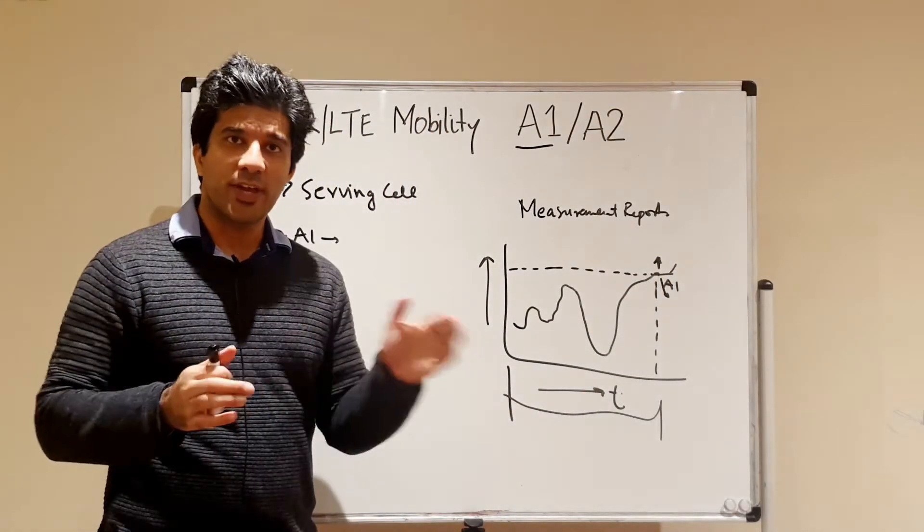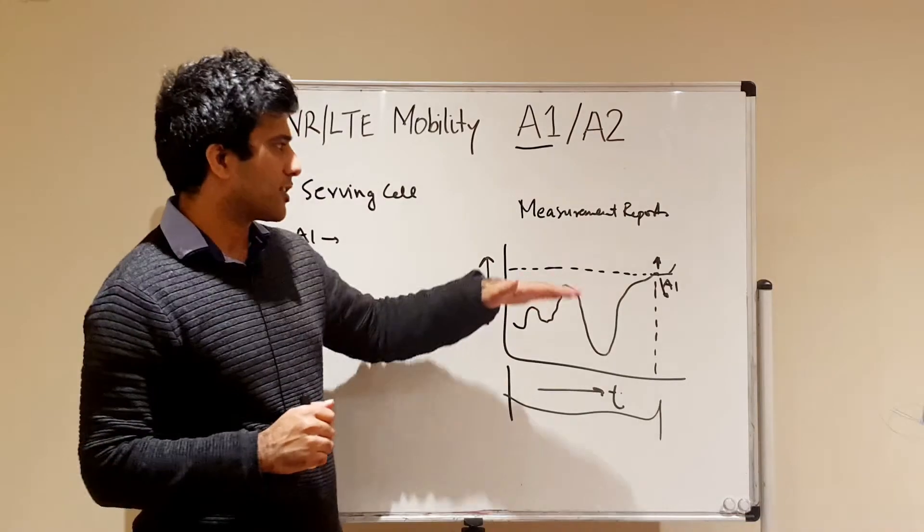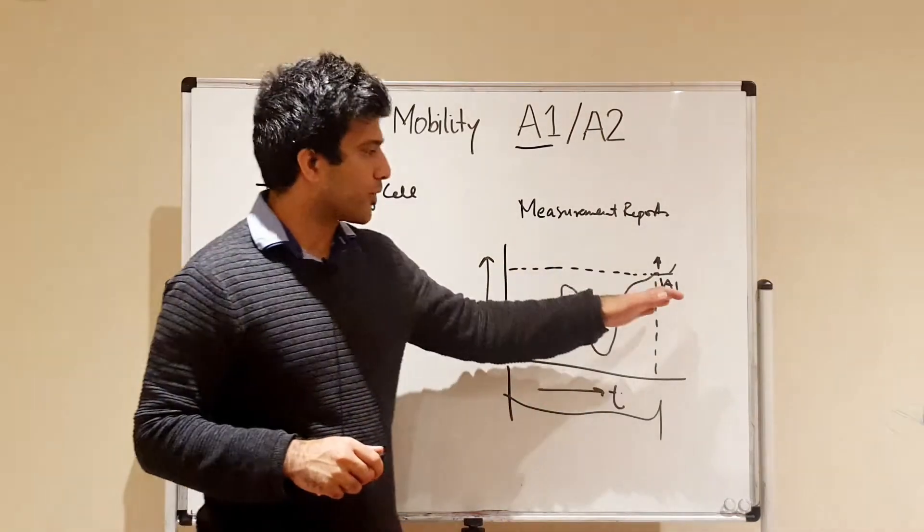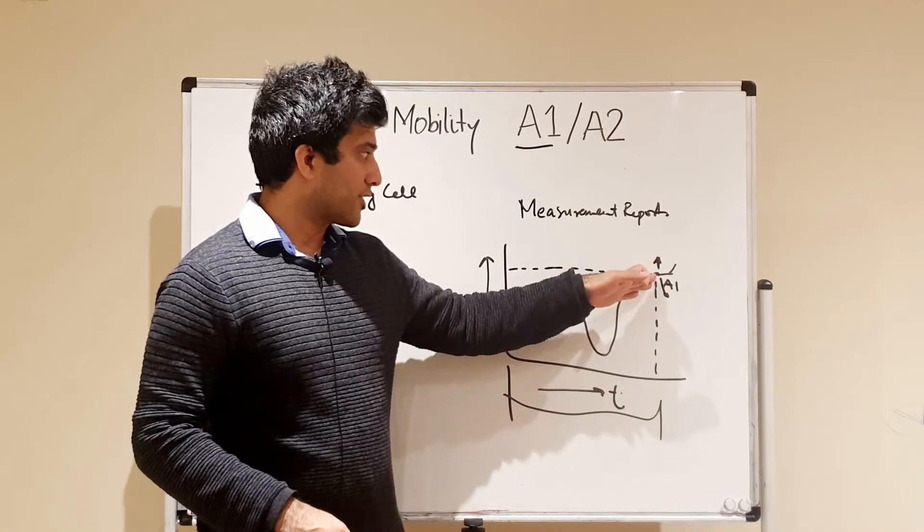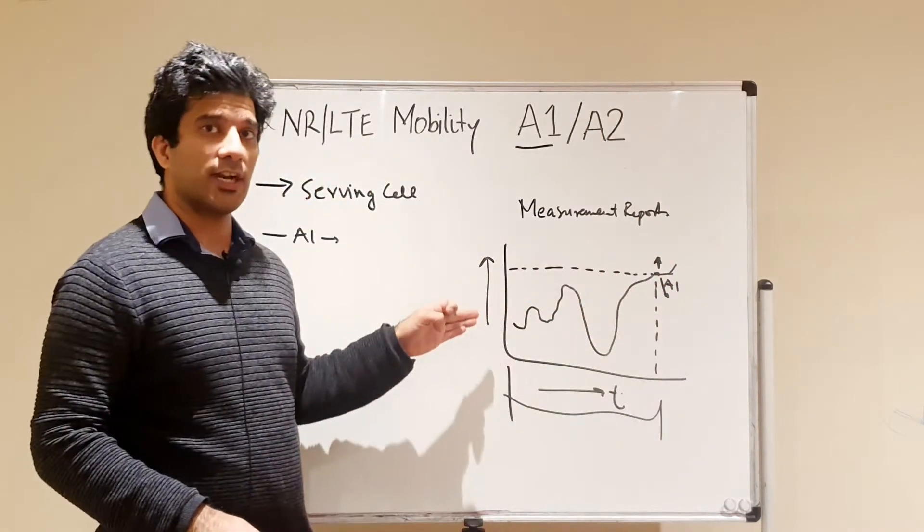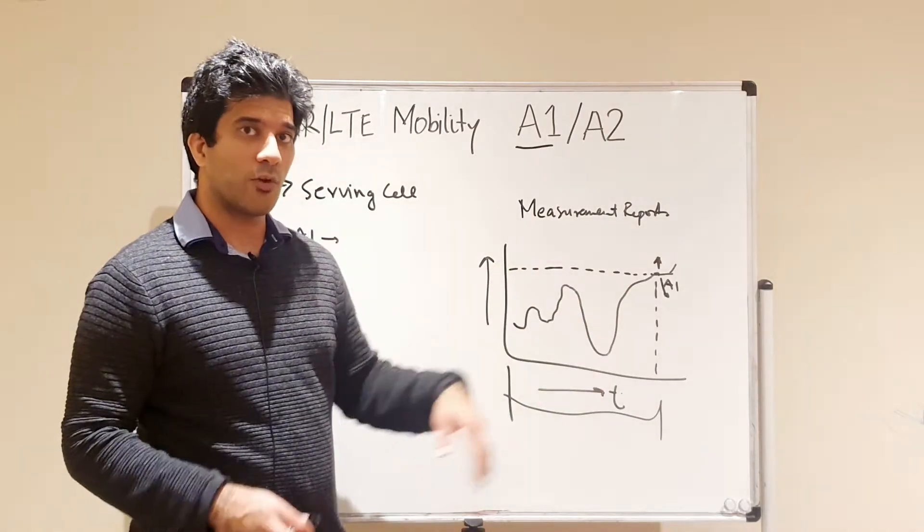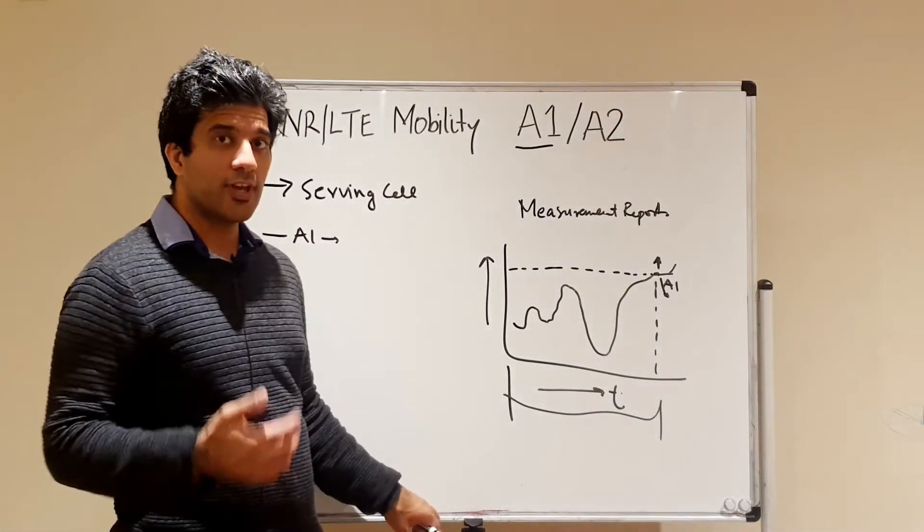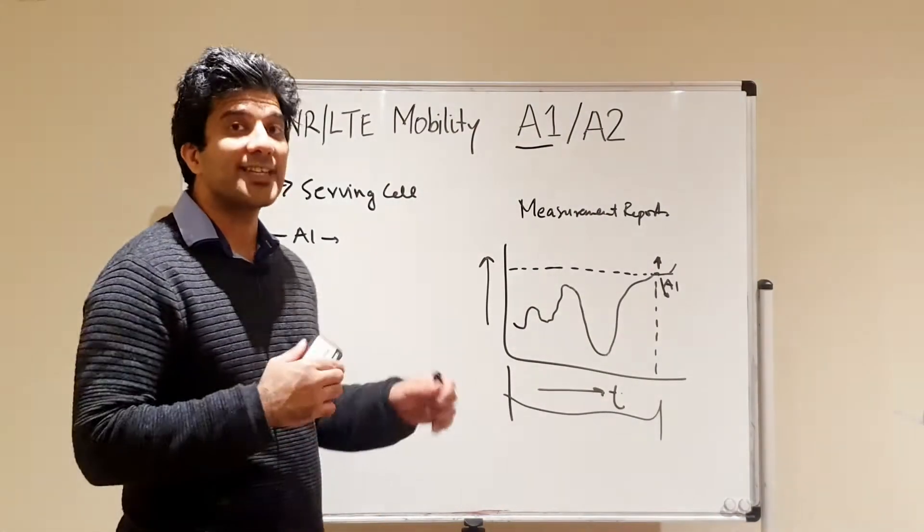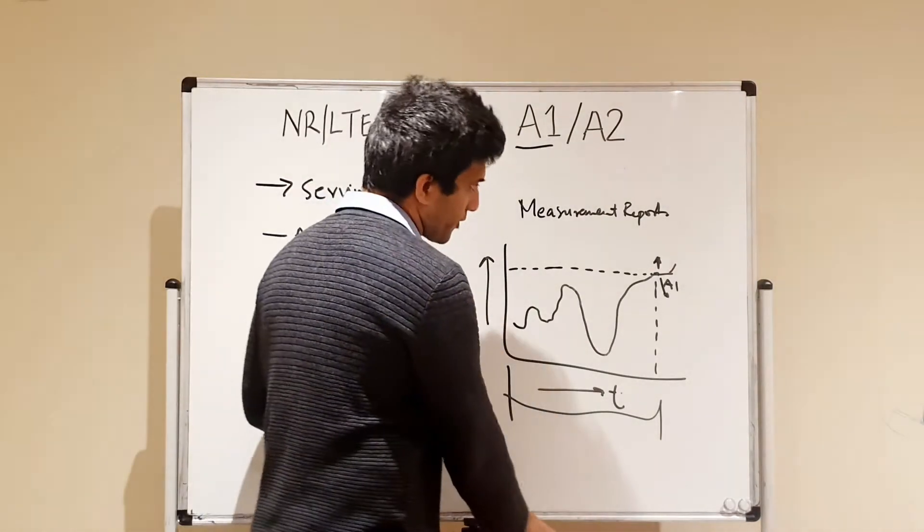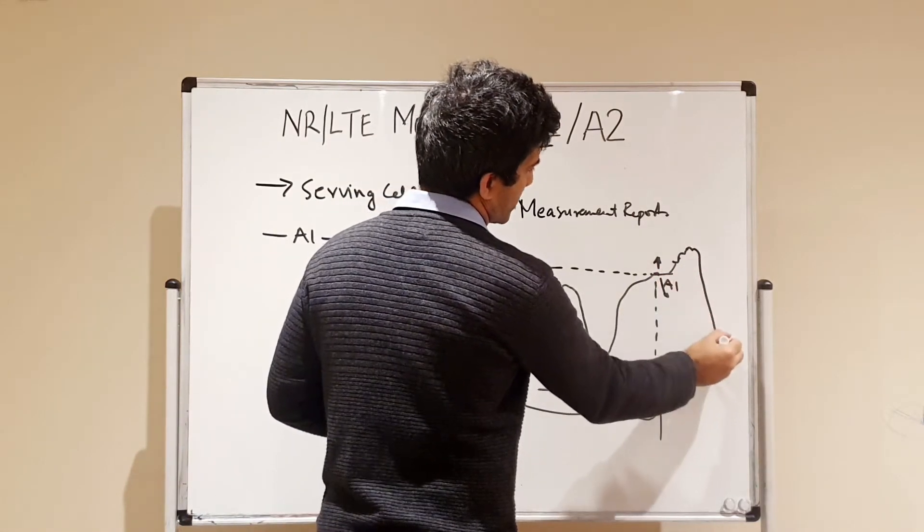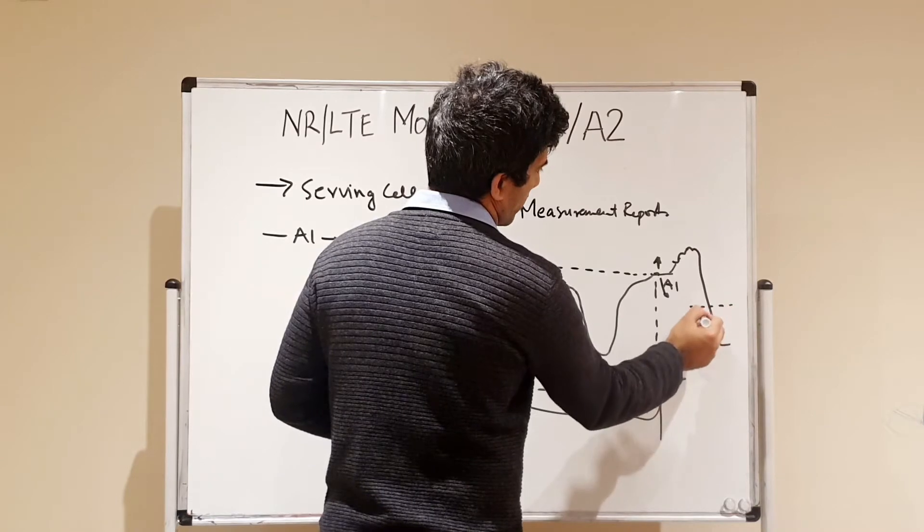Of course there will be the concept of hysteresis where basically you do not want any ping pongs, and we will have some hysteresis plus minus to avoid that. But this is where your serving cell becomes better than a particular threshold and your measurement reports basically cut off. Now once we discuss the next threshold, you will understand how A1 and A2 basically work in tandem. So if the UE goes here and it again goes down, and this is your A2.